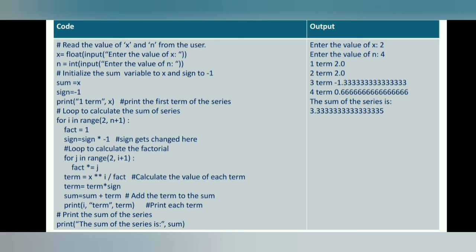In our example, we entered the x value as 2 and the n value as 4. We initialize the variable sum to x — now the sum value is 2, which is the first term of the series, so that the loop starts from the second term. The second term 2**2 is 4. Then 4 is divided by factorial of 2 and the result is 2. Then this value is multiplied by the sign variable — the sign is positive because -1 multiplied by -1 is +1. A new term 2 is added to the sum value of 2 — now the sum is 4. This process continues until the n value is 4. Finally, the sum of the series is 3.333.